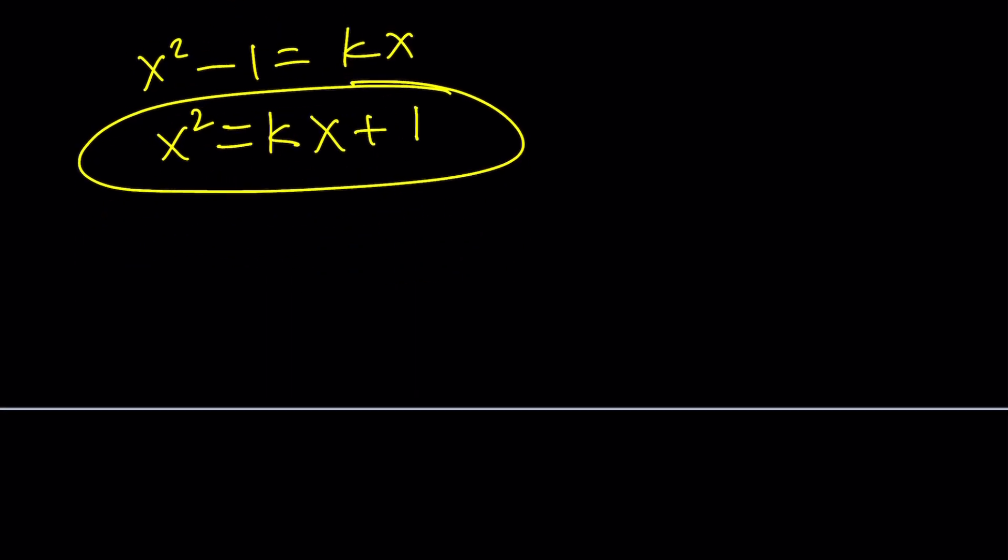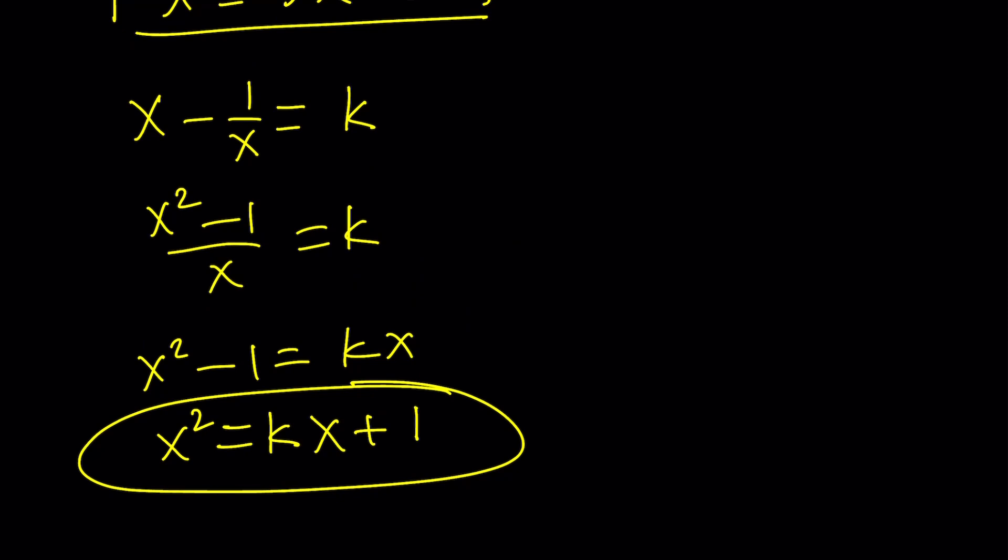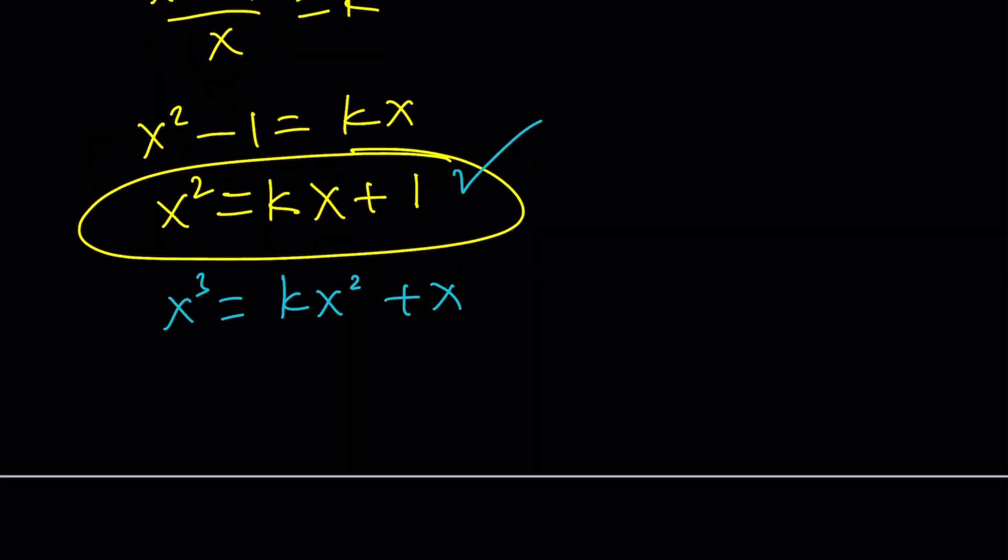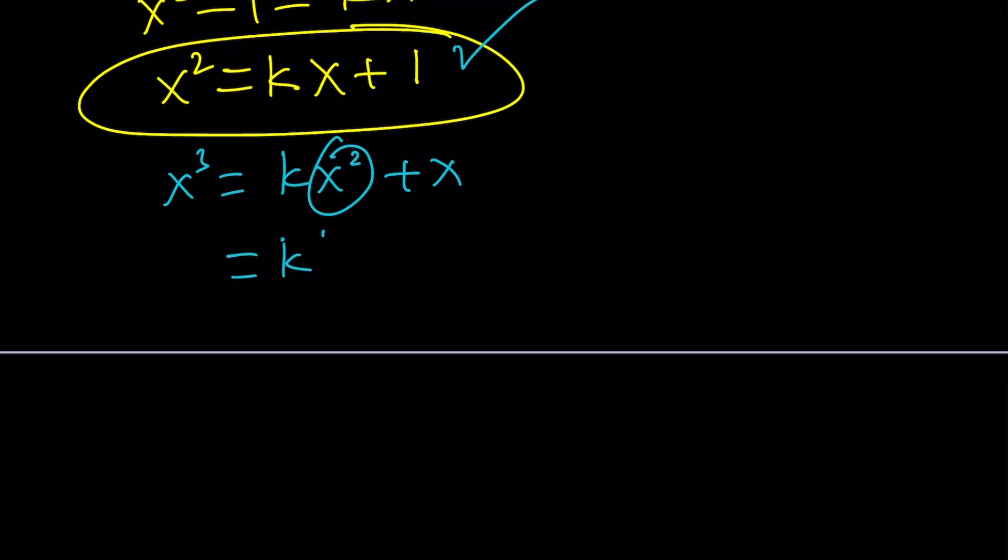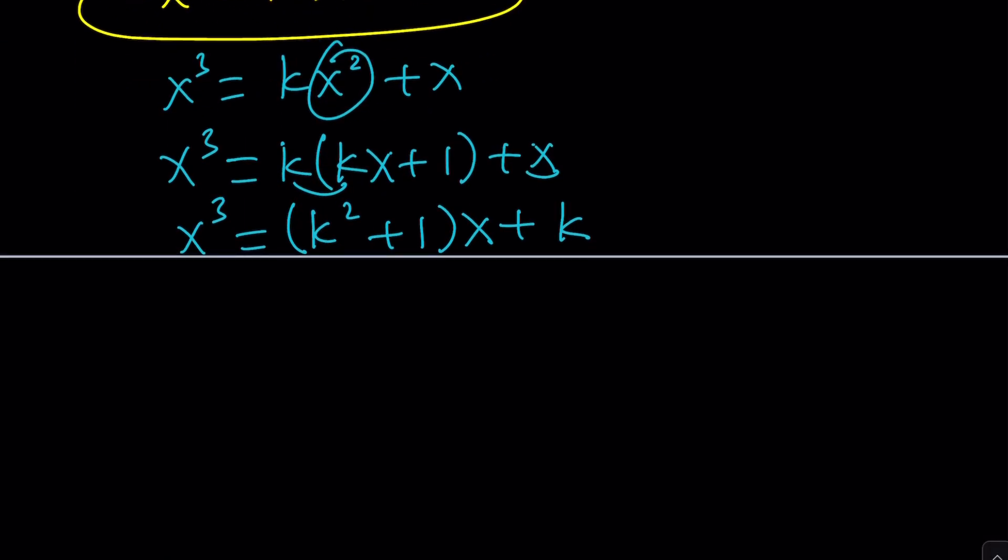This is what x squared equals, and I'd like to go to x cubed from here. Think about these as polynomials, so we can multiply both sides by x. Notice that x squared can always be replaced with kx plus 1. And this gives us a formula for x cubed: k squared x plus k x plus k, which simplifies to k squared plus 1 times x plus k. But we know that x cubed is actually 5x plus 2. So 5x plus 2 indicates that k squared plus 1 equals 5, and k equals 2.